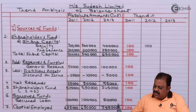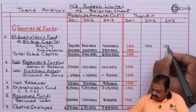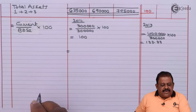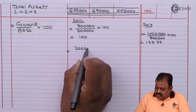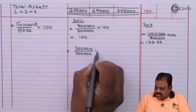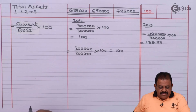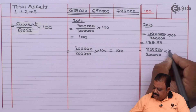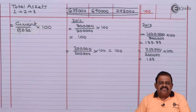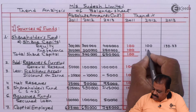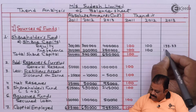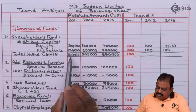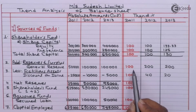So in the 2012 column, equity share capital is 100, and in 2013 it is 133.33%. For preference share capital, the base year is 2 lakhs and 2012 current year is also 2 lakhs, giving 100%. For 2013, preference capital is 2 lakhs 50 thousand ÷ 2 lakhs × 100 = 125%. So the 2012 value is 100 and 2013 value is 125. The same formula — current year figure ÷ base year figure × 100 — applies to all items.